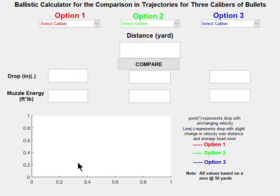This is our final project for programming. The GUI interface that we created is a ballistic calculator for the comparison and trajectories of three different caliber bullets. We have three options with drop-down menus, and each drop-down menu has the same list of caliber bullets.